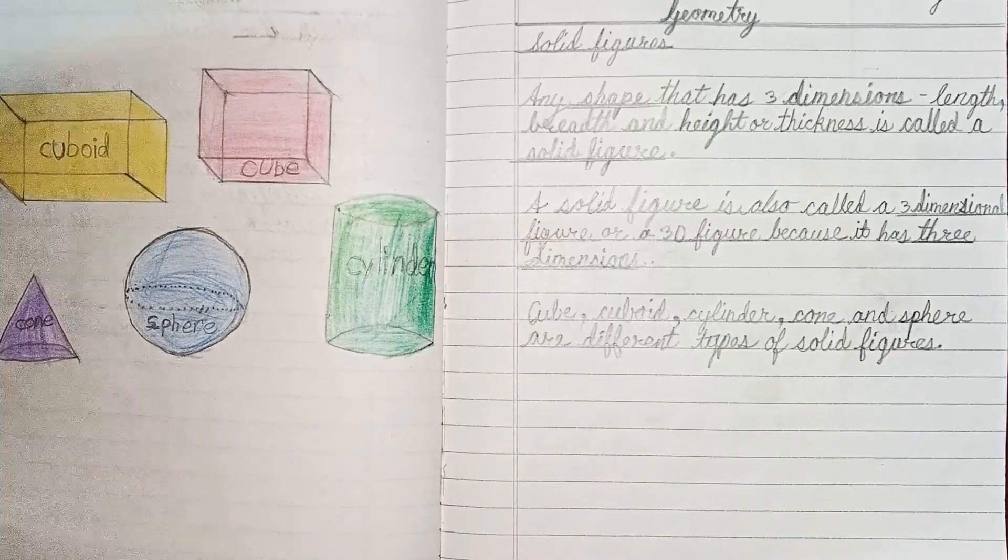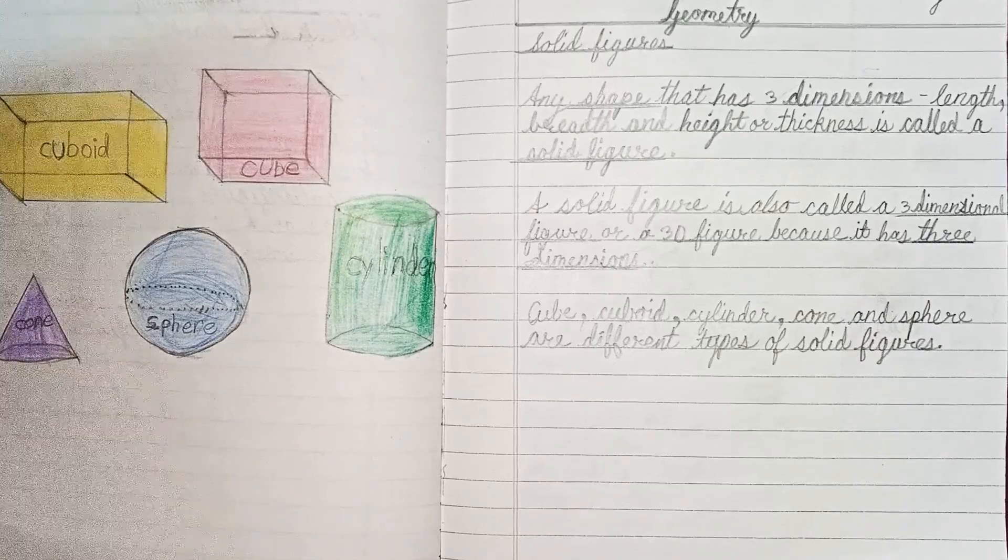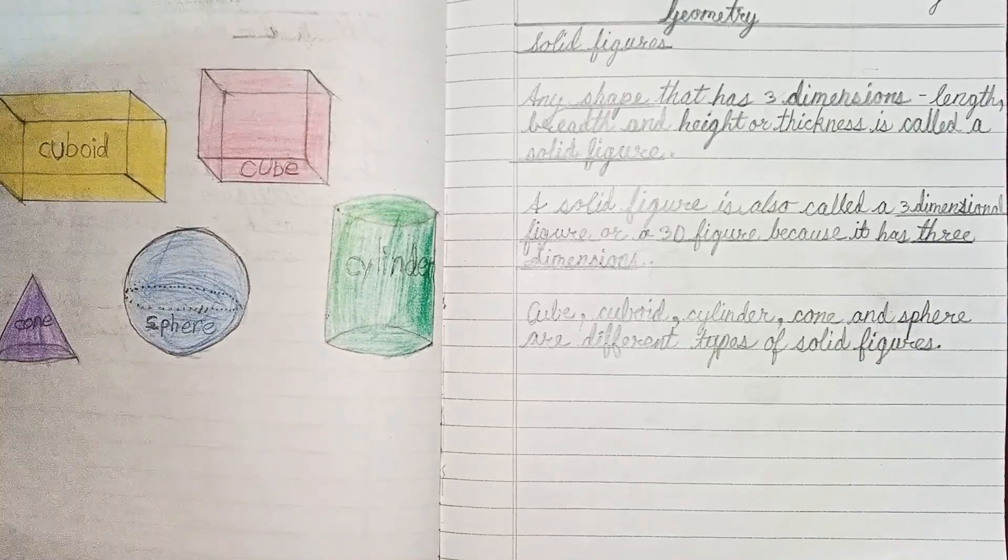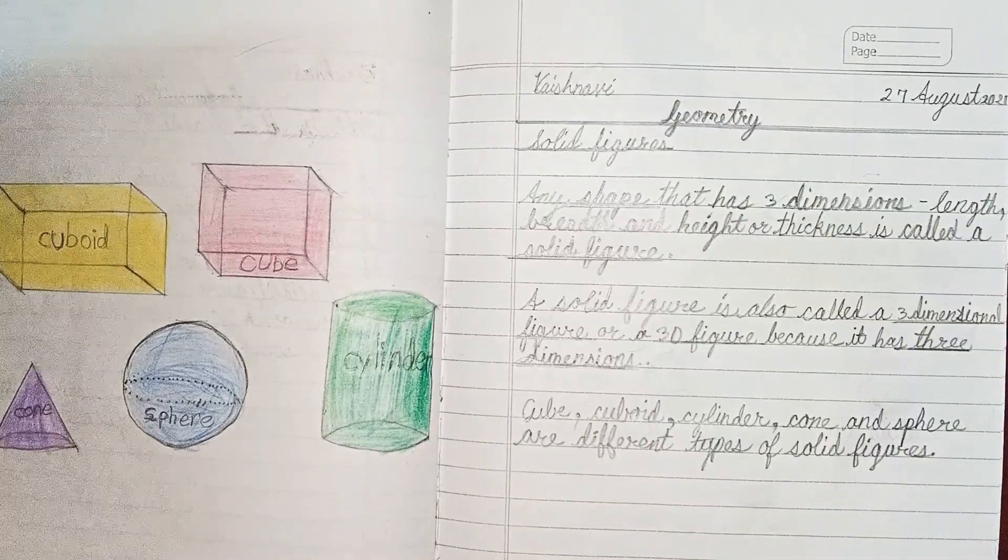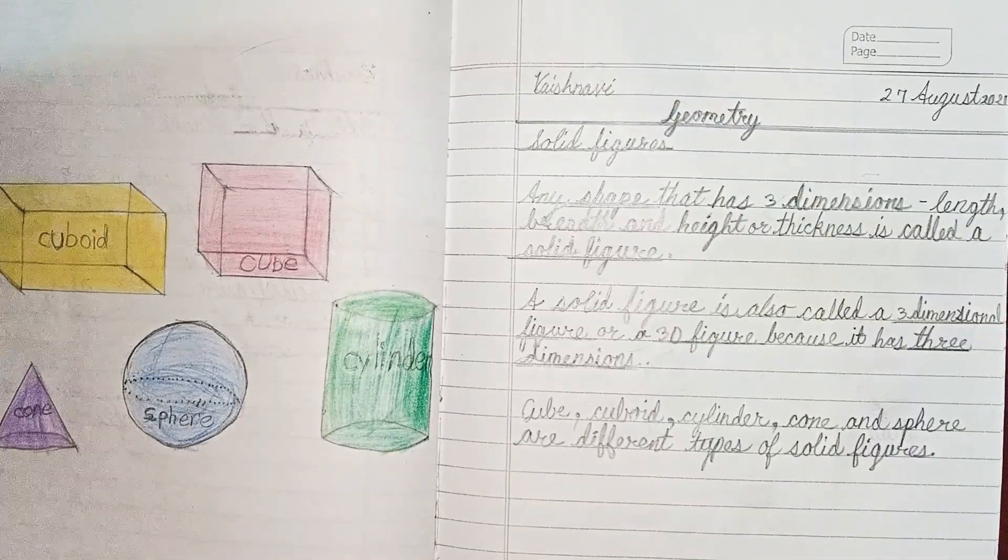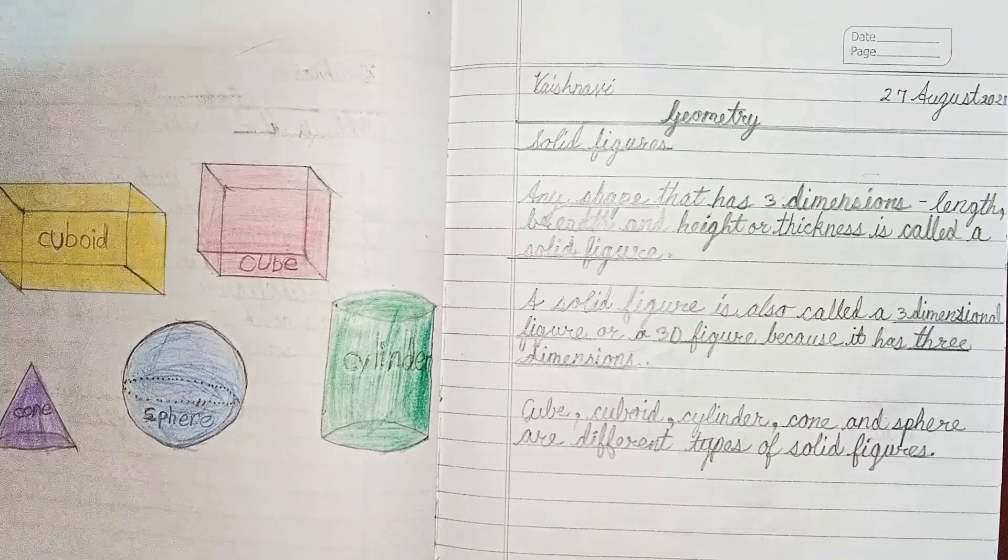Cube, cuboid, cylinder, cone and sphere are different types of solid figures. So these solid figures have three dimensions: length, breadth and height.